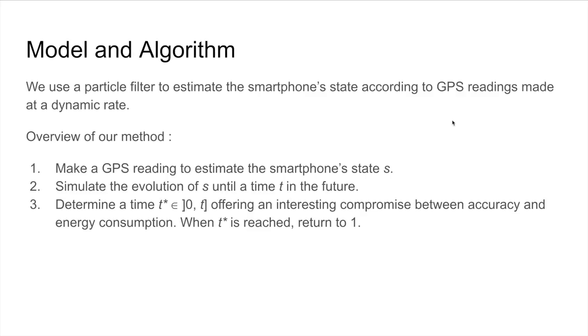On the other hand, you can miss important information if a lot is happening in a short span of time, which is the arc-skipping problem I've discussed. So to achieve a dynamic sampling rate, we'll use a particle filter to estimate the smartphone state according to the readings made by the GPS. Broadly, our method works as follows: First, we make a GPS reading to estimate the smartphone state s. Then we'll simulate all the possible evolutions of s until time t, which is in the future. Then we'll determine a certain time that will offer an interesting compromise between accuracy and energy consumption.